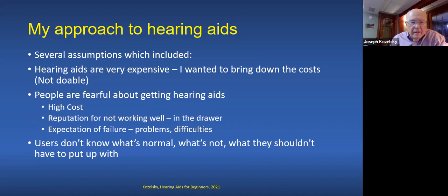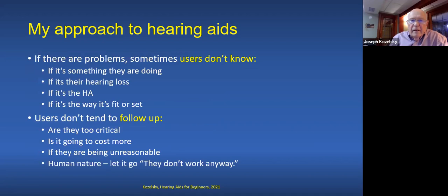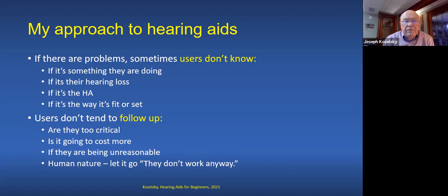We assumed in our practice that users don't really know what's normal and what's not normal — they don't know what to put up with or how to deal with problems. If there were problems, users don't know what the cause is. Is it something they're doing? Is it their hearing loss? Is it the hearing aid, or the way they're fit? They tend not to follow up because they wonder: are they being too critical, is it going to cost more, or are they being unreasonable?